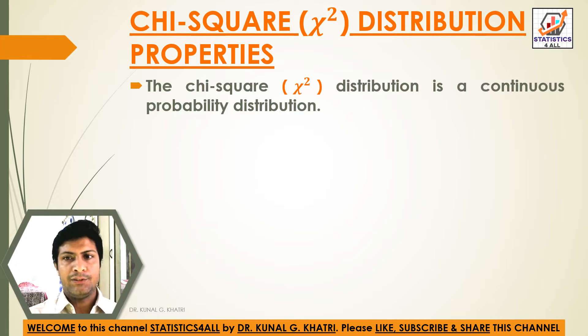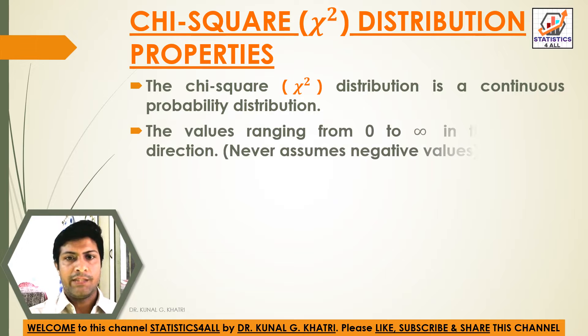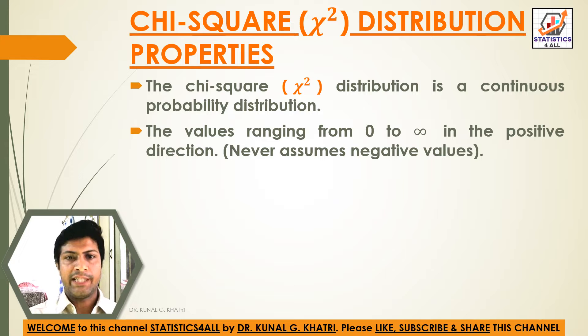The chi-square distribution is a continuous probability distribution. The values range from zero to infinity in the positive direction — that is, it never assumes negative values.